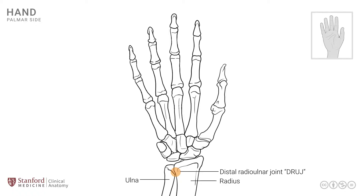This joint, along with its proximal counterpart, the proximal radio-ulnar joint, participate in the movement of pronation and supination. The distal ends of these two bones, the radius and ulna, articulate with the small bones of the wrist known as the carpal bones, sometimes collectively called the carpus.